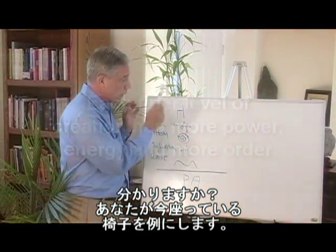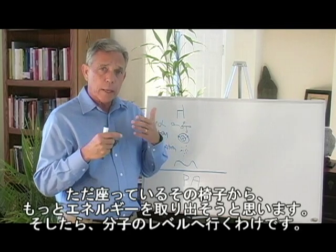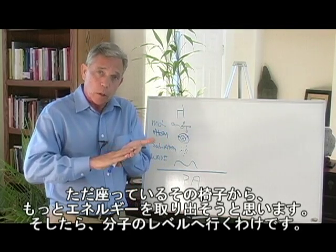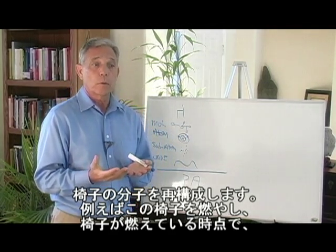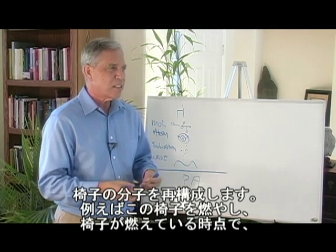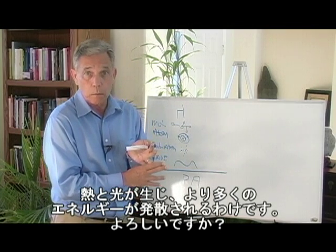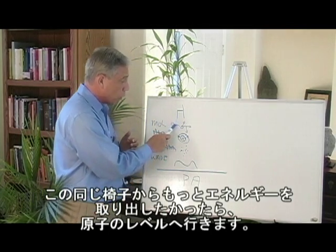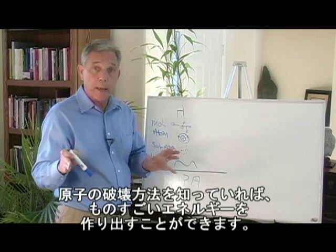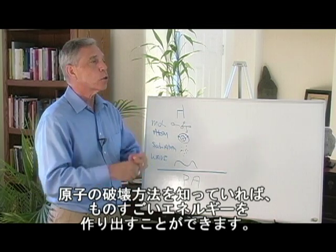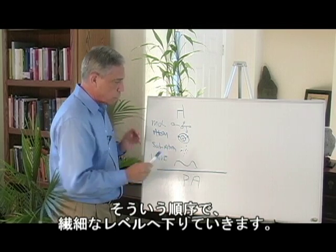How do we know that? If I took the chair you're sitting in and you wanted to get more energy out of it than just sitting on it, you could go to the molecular level, rearrange the molecules — say by lighting it on fire — and release much more energy in the form of heat and light. If you wanted even more energy, you could go to the atomic level: split the atoms of the chair and release huge amounts of energy. And so it goes on down through the finer levels.